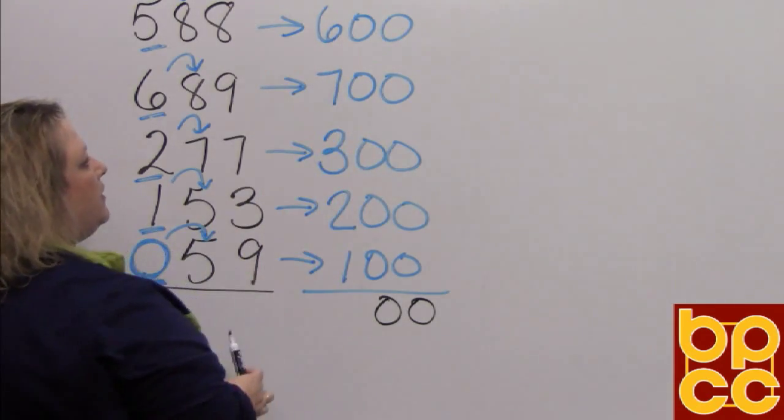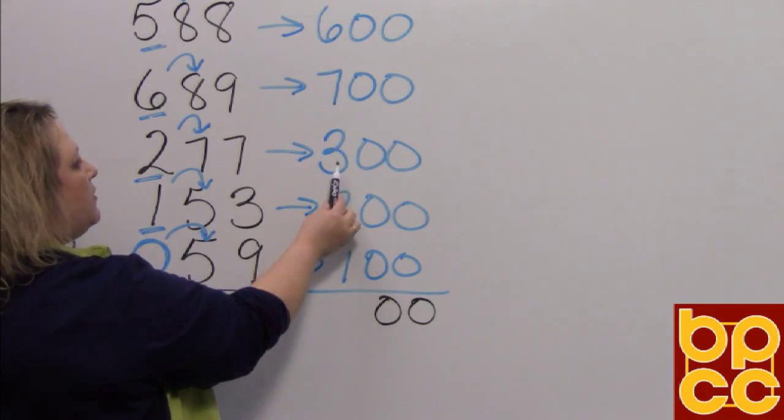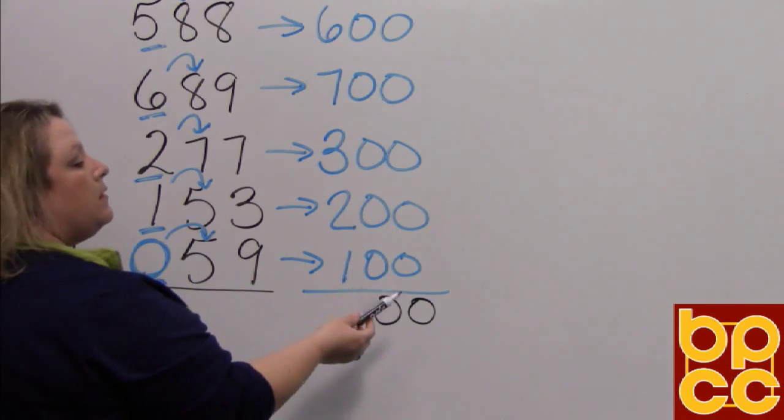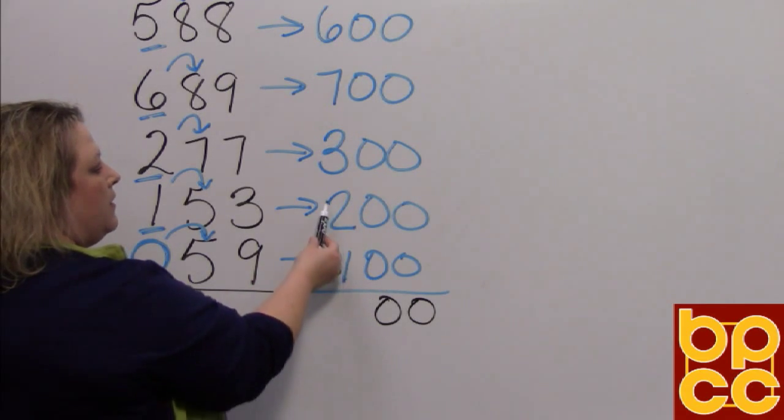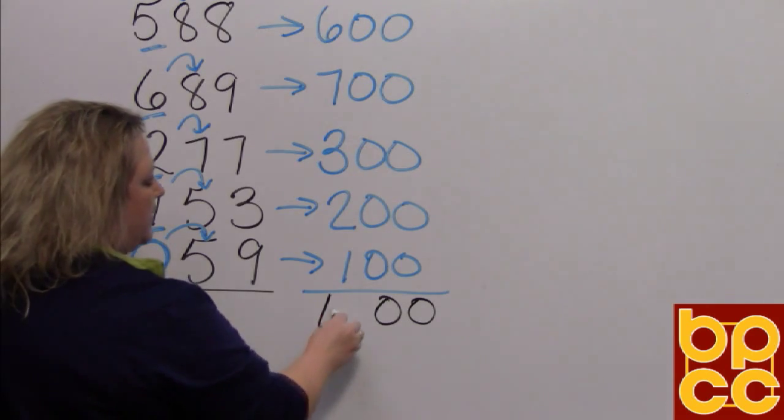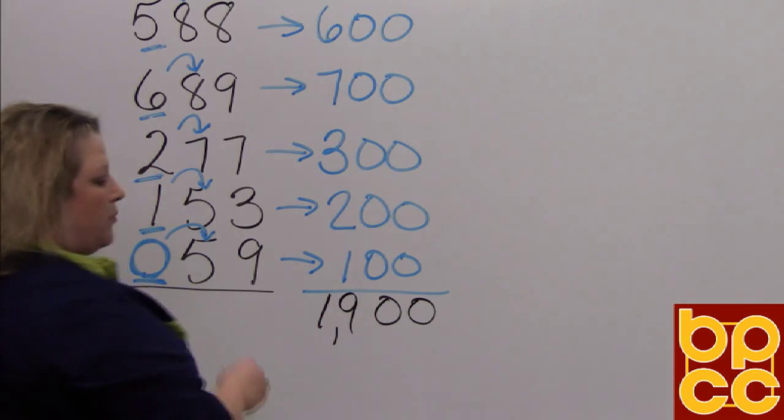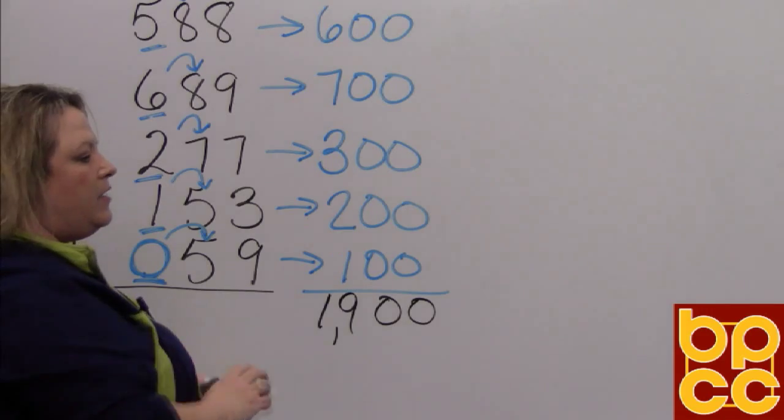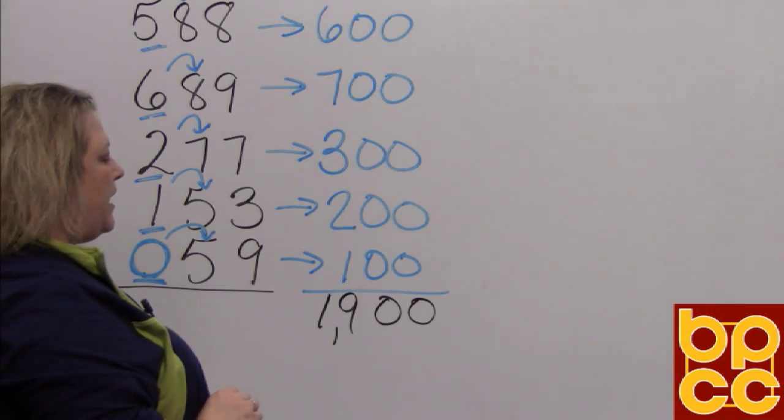So that'll be six plus seven, that makes 13. Thirteen plus three, that makes 16, plus two makes 18, plus one makes 19. So that is approximately 1,900 miles that the family has traveled.